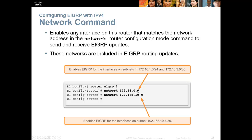Also, the network statements — the network statement doesn't tell you what networks to advertise. It tells you: if any interfaces match this network statement, advertise the network on those interfaces. It says, for EIGRP, any of my interfaces that match 172.16, I'm going to advertise their network. So in this case, 172.16.1 and 172.16.3 both match 172.16, so I'll advertise the 16.1 and the 16.3 network.